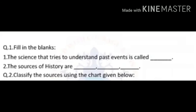Let's see what we understood from the previous topic. A small exercise is on the screen. Question 1 — Fill in the blanks: The science that tries to understand past events is called History. Question 2 — The sources of history are Material, Written and Oral.